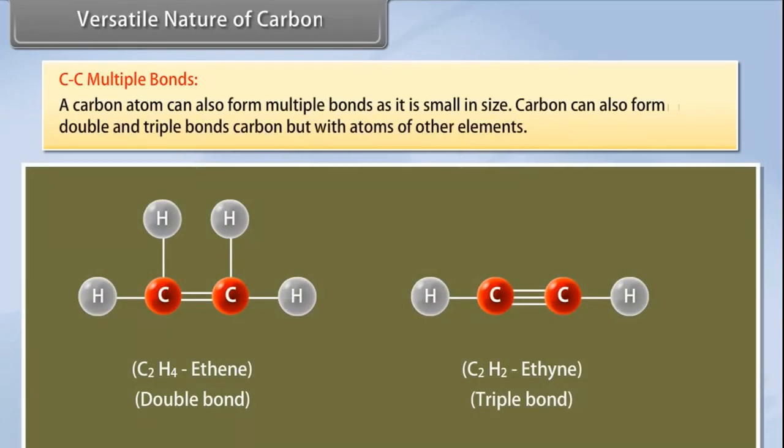A carbon atom can also form multiple bonds as it is small in size. Double and triple bonds can also be formed with not only carbon but with atoms of other elements like oxygen, nitrogen, and so on. These multiple bonds provide variety in carbon compounds.